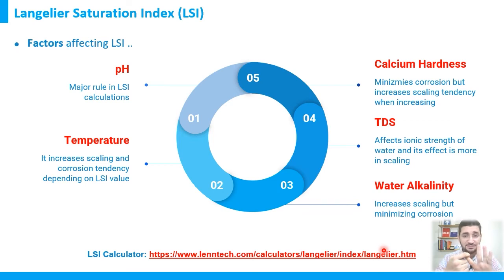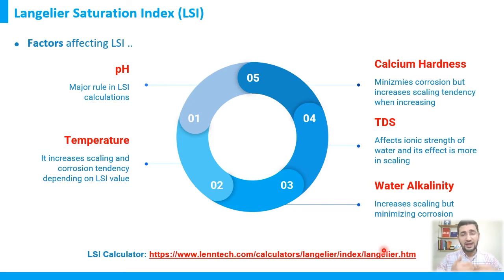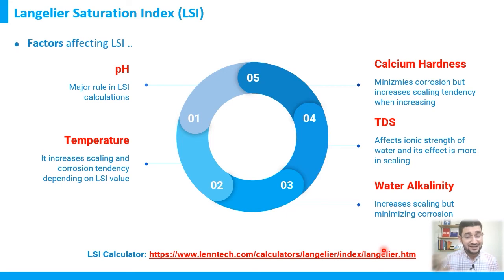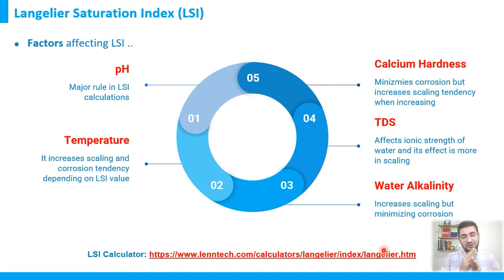We've now discussed pH and temperature. The third parameter is calcium hardness, which gives us the calcium concentration. Calcium concentration plays a role in calculating the solubility product and the saturation level of calcium carbonate in water. The higher the calcium concentration, the higher the LSI value, and the greater the scaling tendency. As calcium hardness increases, we expect an increased LSI value.